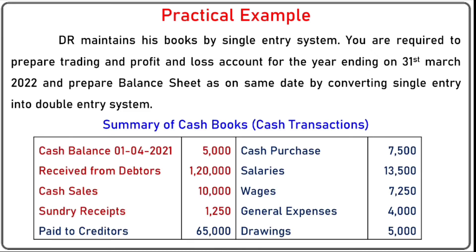We are given a summary of cash transactions. Cash balance received from debtors, cash sales, sundry receipts — all these are related to income side. Paid to creditors, cash purchases, salaries, wages, general expenses, and drawings are related to cash out. These are cash in, and these are cash out. When we prepare cash and bank account to find out the closing cash balance, we will use these particular balances.